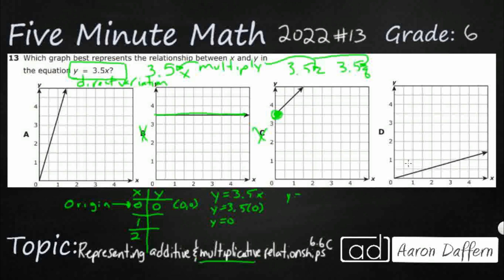So y is my dependent variable. Y equals 3.5. Okay. That makes sense. So I have a coordinate of 1 and 3.5.